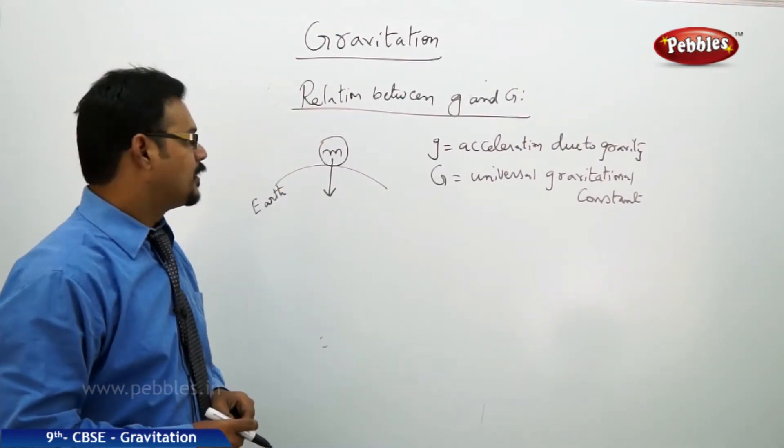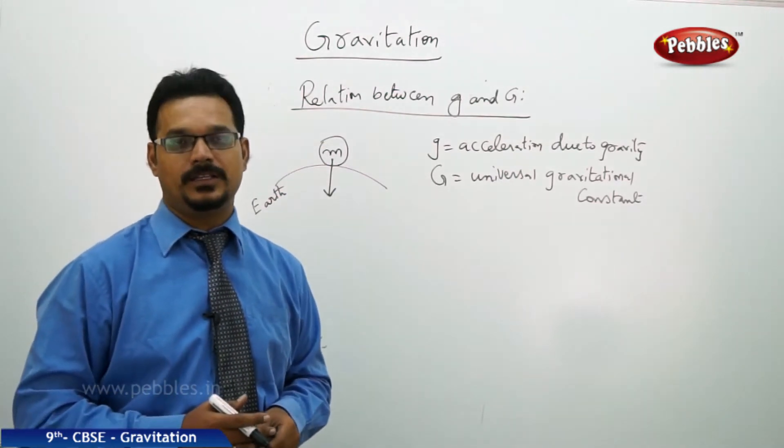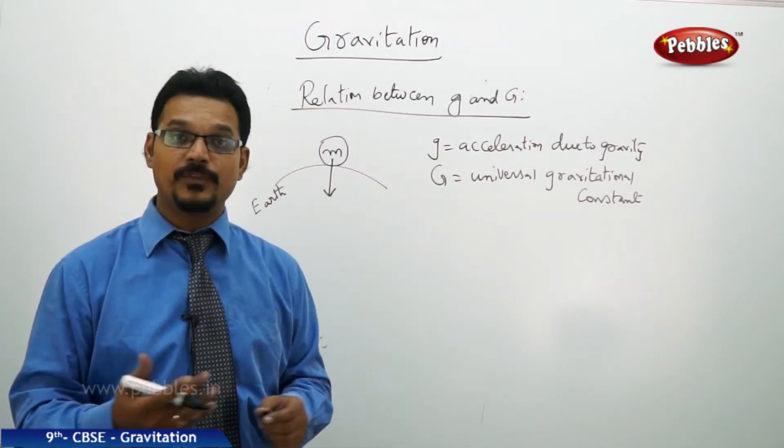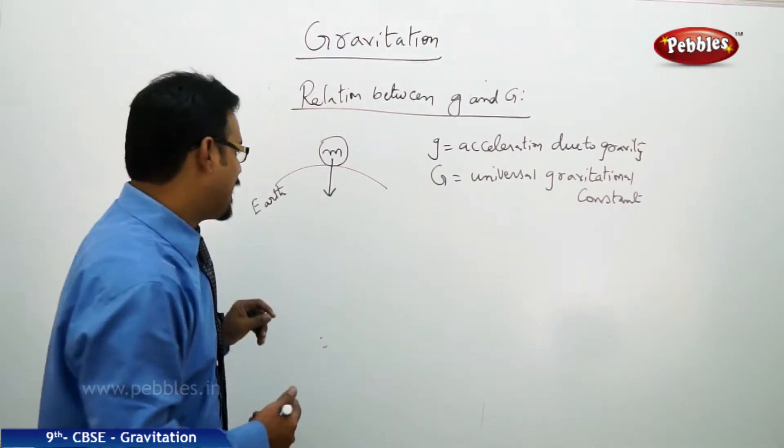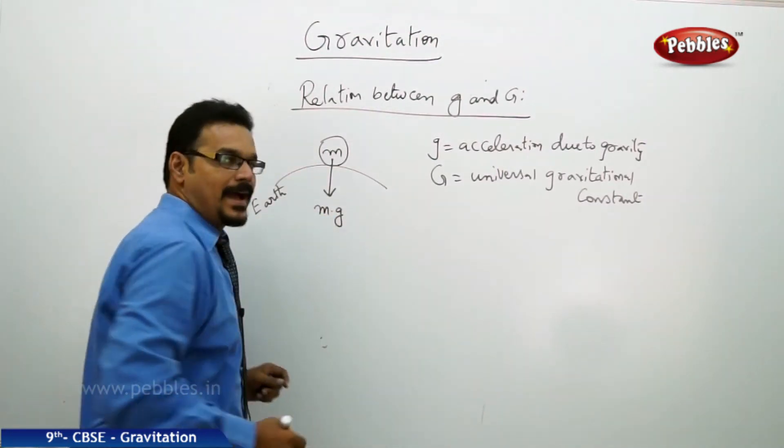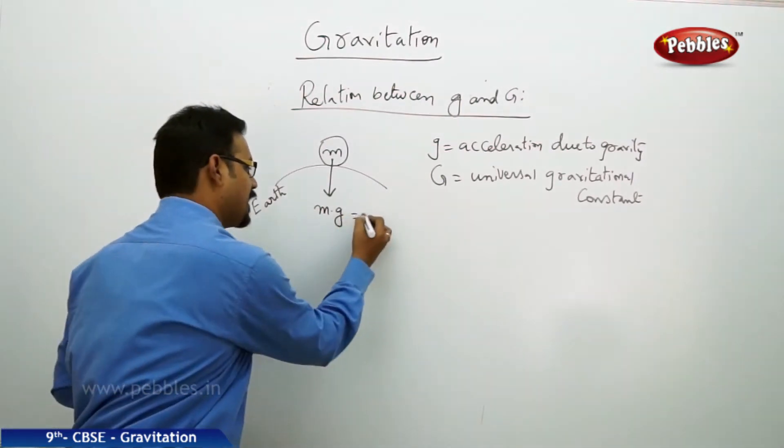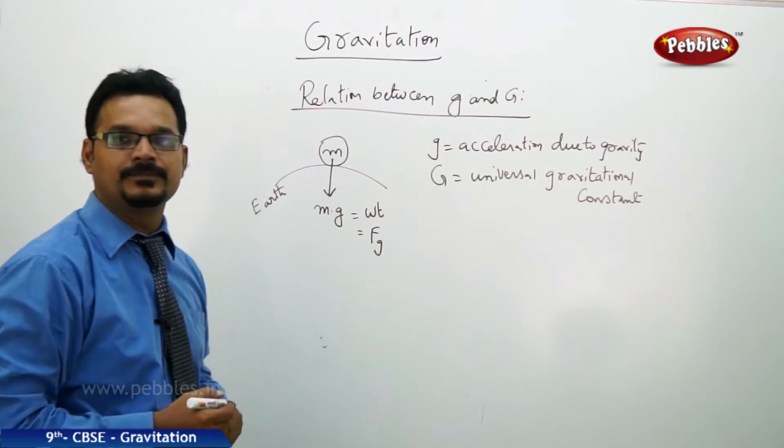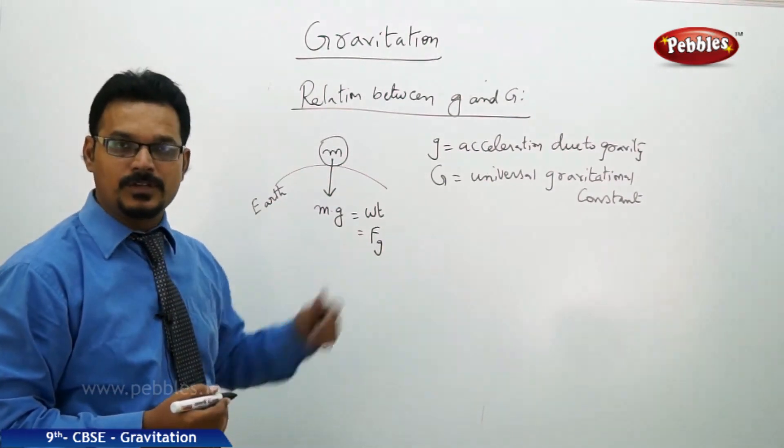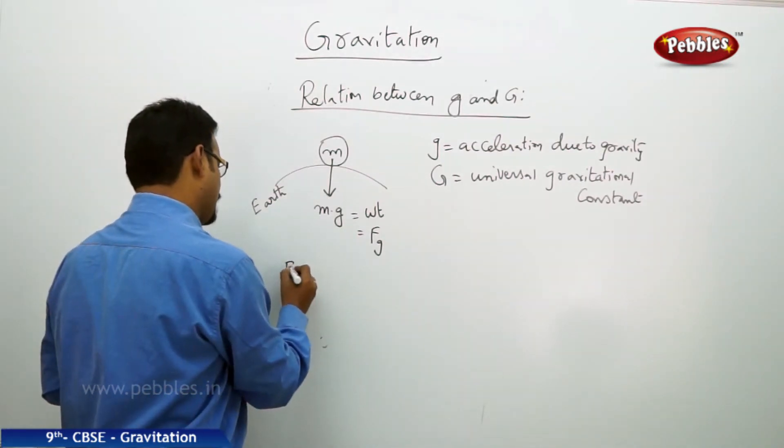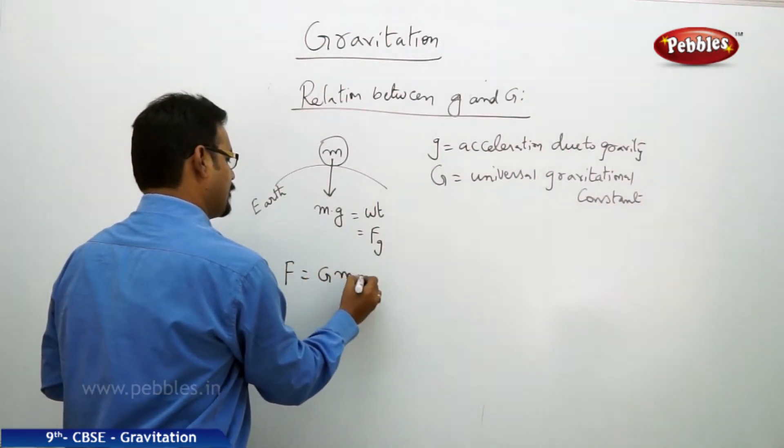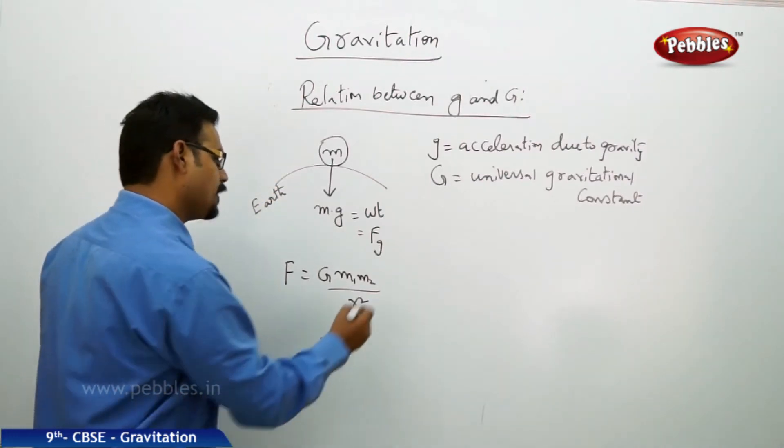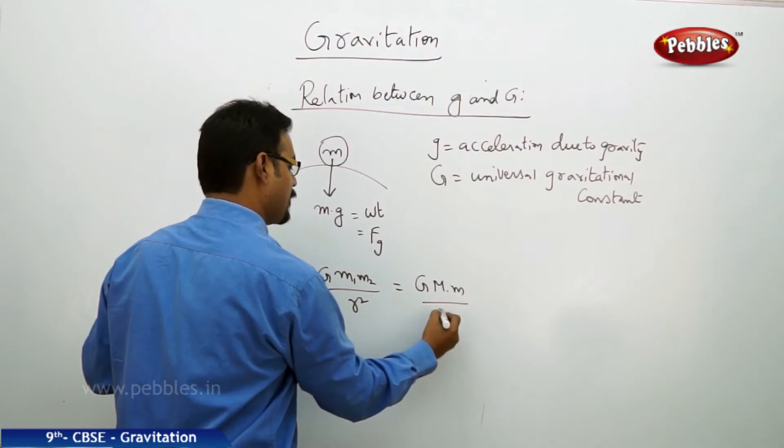Now how do we relate these two g's? See this diagram. Here there is a mass of m on the surface of the earth. You know that all the objects on the earth experience gravitational force by the earth, and this gravitational force is also called weight of the body. So this body is also having weight, and the weight formula is mass into acceleration due to gravity, mg. This is the weight of the body, force of gravity.